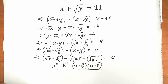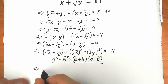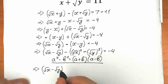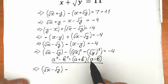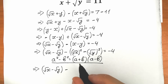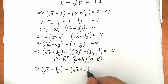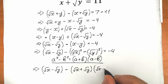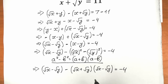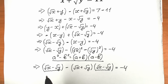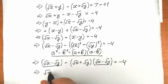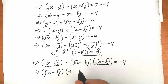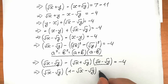Let's plug this in. We have (square root of x minus square root of y) minus (square root of x plus square root of y)(square root of x minus square root of y) equal to minus 4. Now we can factor out the common term (square root of x minus square root of y). So we get (square root of x minus square root of y) times (1 minus (square root of x plus square root of y)) equal to minus 4.